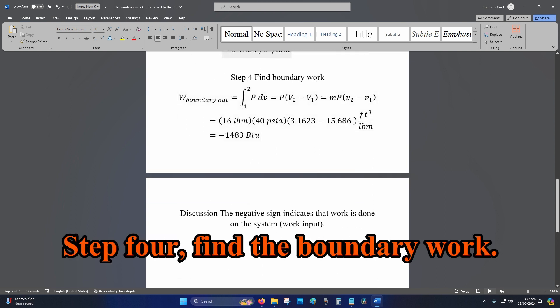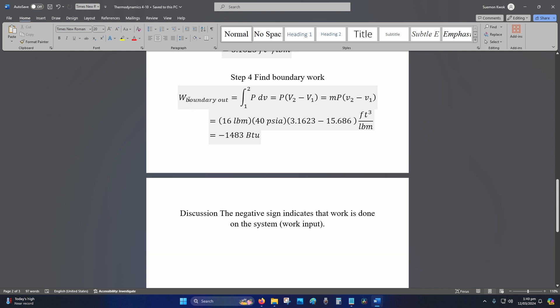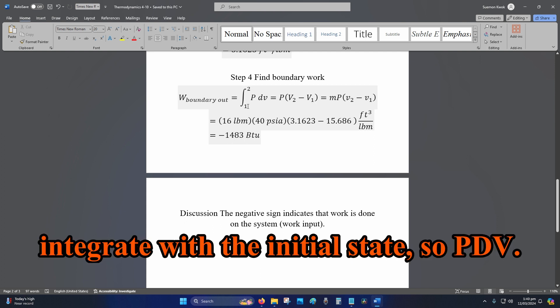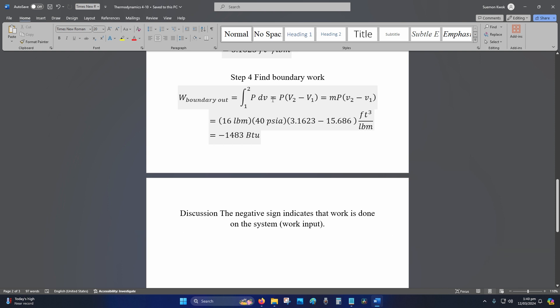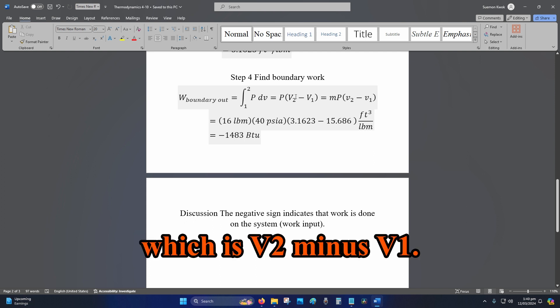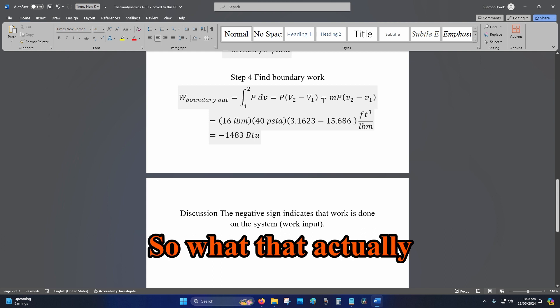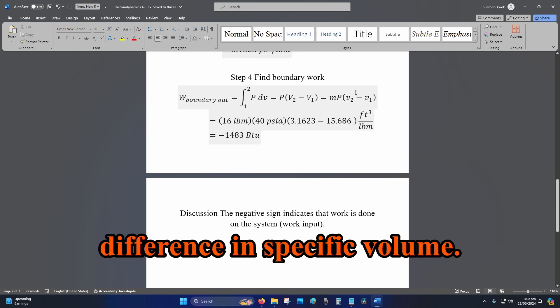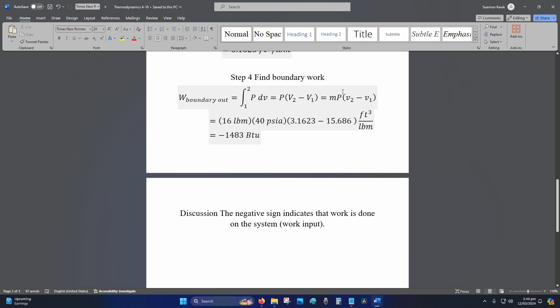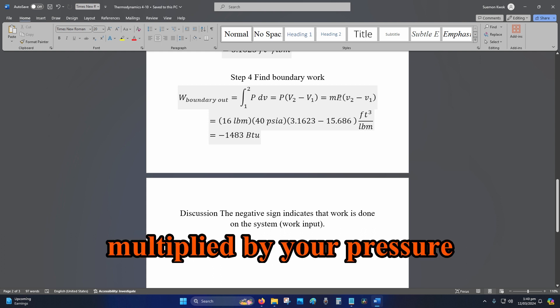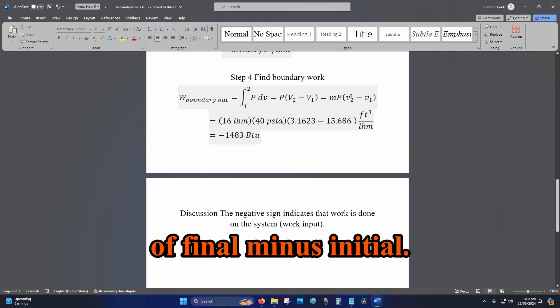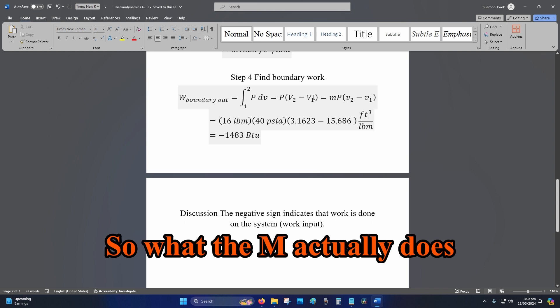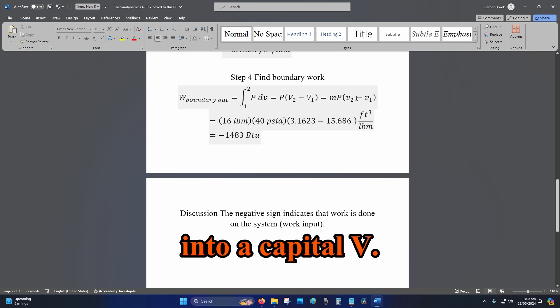Step 4, find the boundary work. So now we need to do the integration. So W boundary work out is the final state integrate with the initial state. So PDV. And then that becomes P multiplied by the difference in your actual volume, which is V2 minus V1. So what that actually is, it's M multiplied by P multiplied by the difference in specific volume.